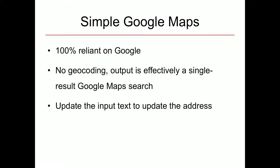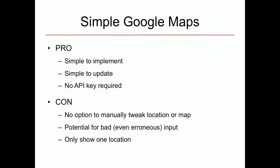The next option is Simple Google Maps — a very lightweight module. It's completely reliant on Google and effectively creates an iframe that searches on whatever text you give it as an address. It's pretty simple, but you don't always know for sure if it's going to be accurate, and if users are adding these to nodes you don't really know what you're going to get. It's simple to implement but gives you very little control — if Google Maps puts the pointer on a given point there's no ability to tweak it. You basically get what you get.